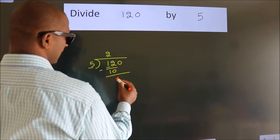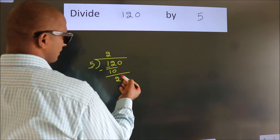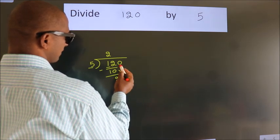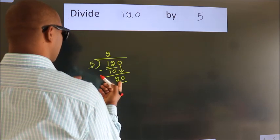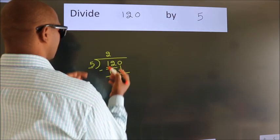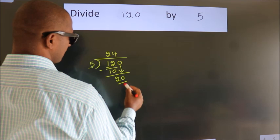After this, bring down the beside number, so 0 down. So 20. When do we get 20 in the 5 table? 5 times 4 equals 20.